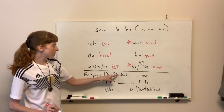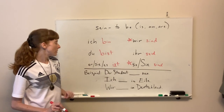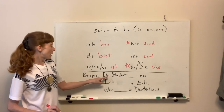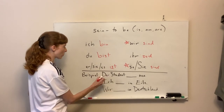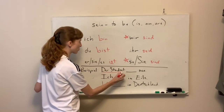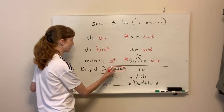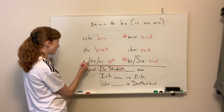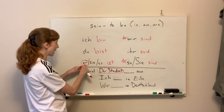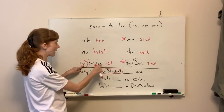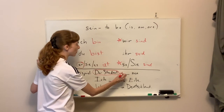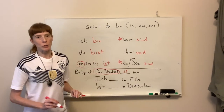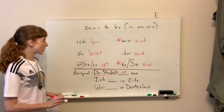First one: der Student, blank, neu. We're trying to say 'the student is new.' We need to decide what our subject is — der Student. That's a he, so we're looking at er. Er ist. We put ist in the blank, and we have: der Student ist neu — the student is new.